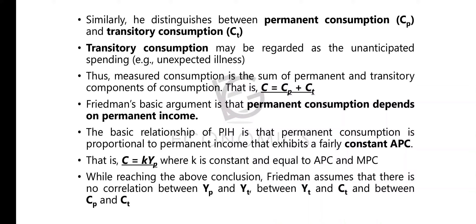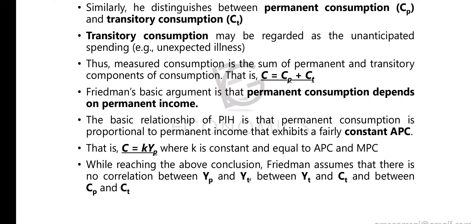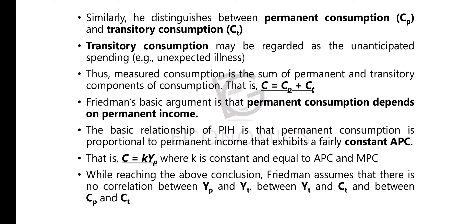Permanent consumption exhibits a fairly constant APC (Average Propensity to Consume). Unlike Keynes, who said APC is decreasing, here it remains constant. The equation is: C = K·Yp, where K is a constant representing APC or MPC (Marginal Propensity to Consume), and Yp is permanent income. Consumption depends on a fixed proportion of permanent income.